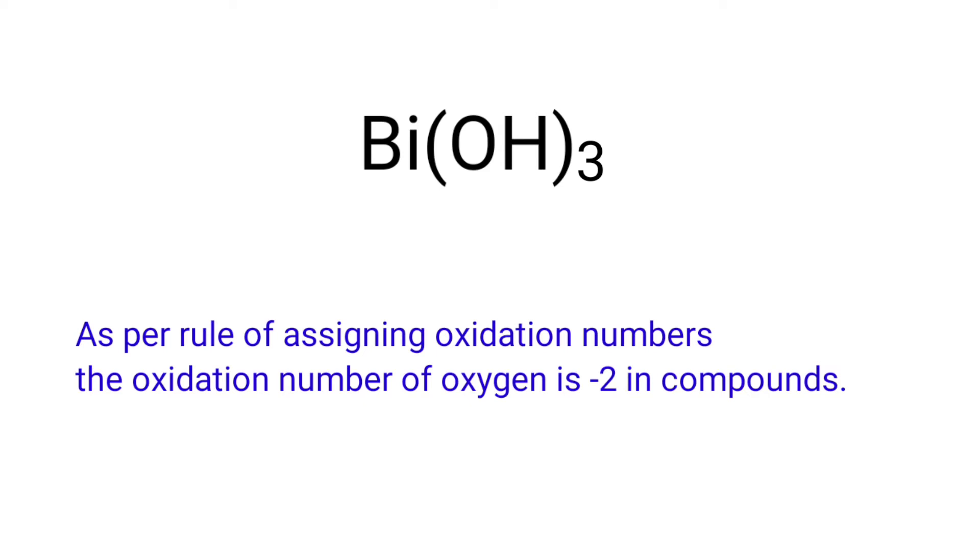As per rule of assigning oxidation numbers, the oxidation number of oxygen is minus two in compounds. We can write the oxidation number of the element above its symbol and the total number of the oxidation number of the atoms below its symbol.